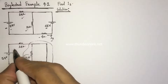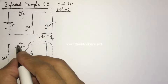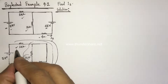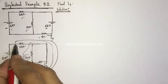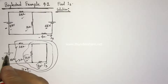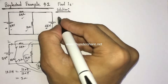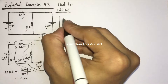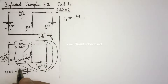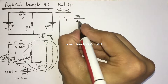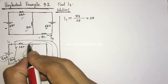We see that the 3-ohm resistance and 24-ohm resistance are in series, so these two resistances will be added directly. The equivalent resistance of this whole part will be 24 plus 3, which equals 27 ohms. Now we can determine current using Ohm's law. Current I1 equals 54 volts divided by 27 ohms, which equals 2 amperes.